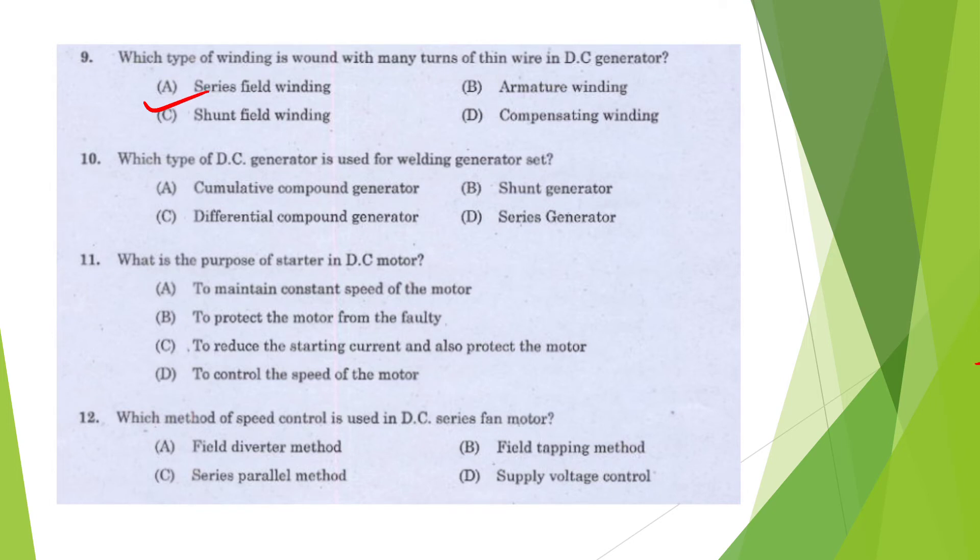Question 11: Which type of DC generator is used for welding generator set? Cumulative, shunt, differential, or series? Option C. Question 12: What is the purpose of starter in DC motor? To maintain constant speed, protect from fault, reduce the starting current, or control speed? To reduce the starting current and protect the motor.